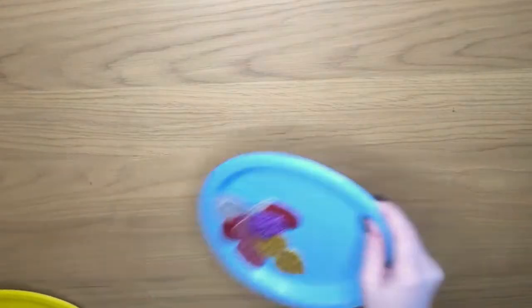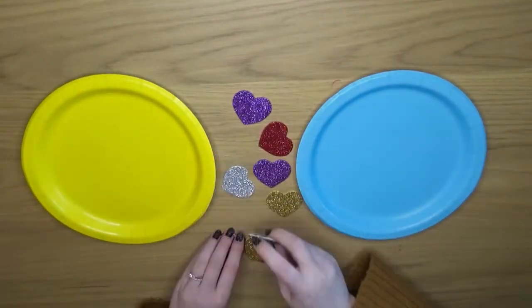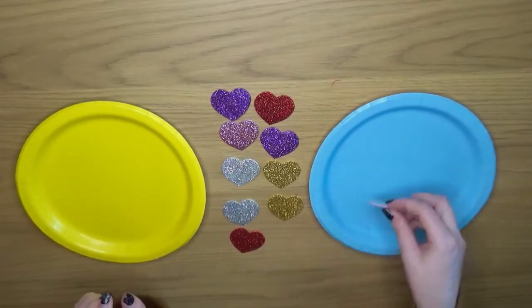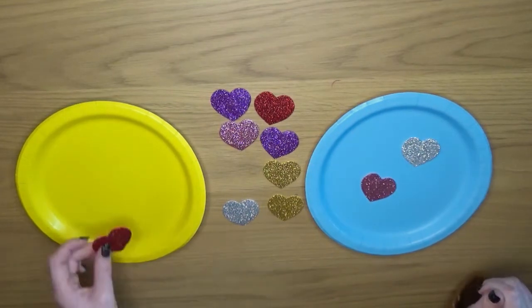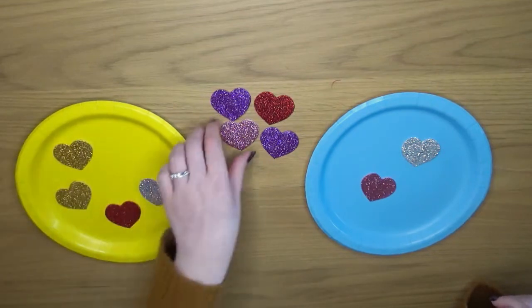Next up we have something that looks more like a sorting activity or a sharing activity. We have two plates and then ten objects. I am of course using these sparkly stars but you can use absolutely anything you like, any kind of resources you have in your classroom as long as you've got ten of them.